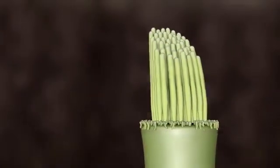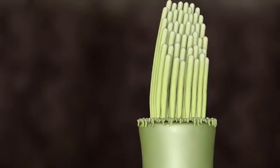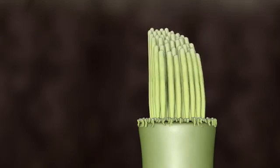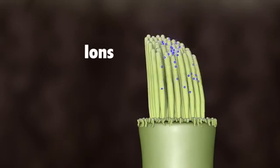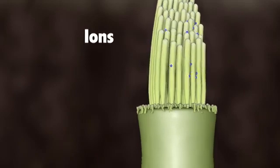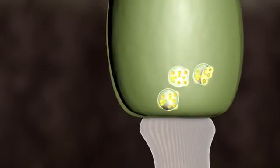The hair bundle on top of the hair cell turns these movements into electrical signals. As the hair bundles are moved, ions rush into the top of the hair cells, causing the release of chemicals at the bottom of the hair cells.